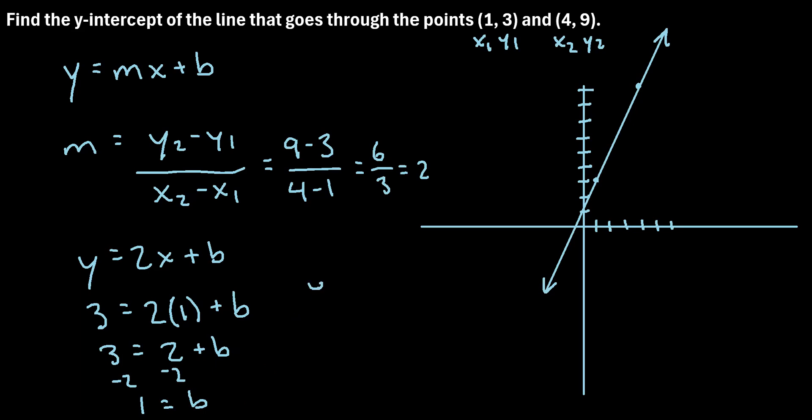So as our final answer, we can write y-intercept is equal to one. When x is equal to zero, y is equal to one.